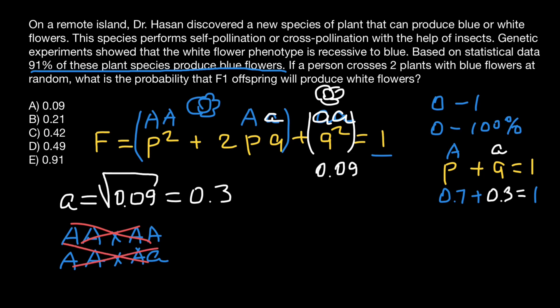The only way to take two parents with blue flowers and produce white flowers in the progeny is when both parent one and parent two are heterozygous. In that case, a Punnett square shows that one quarter of the progeny will be small a, small a — white flowers — and three quarters will phenotypically have blue flowers.